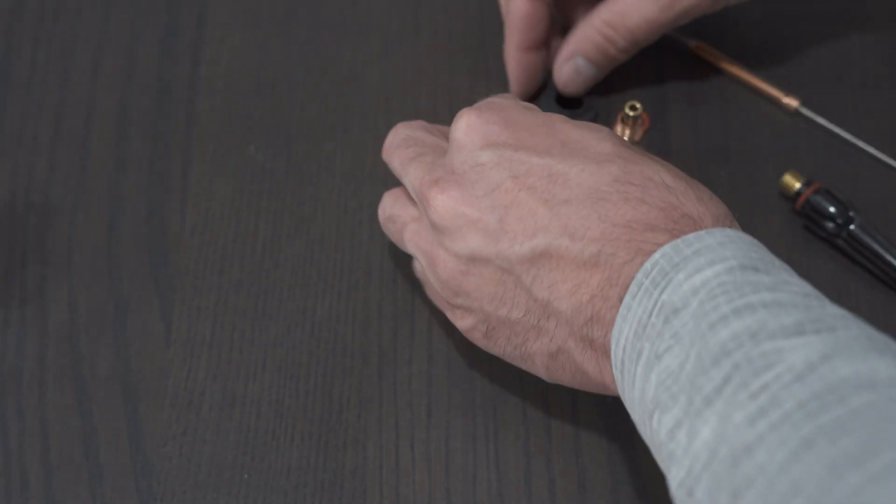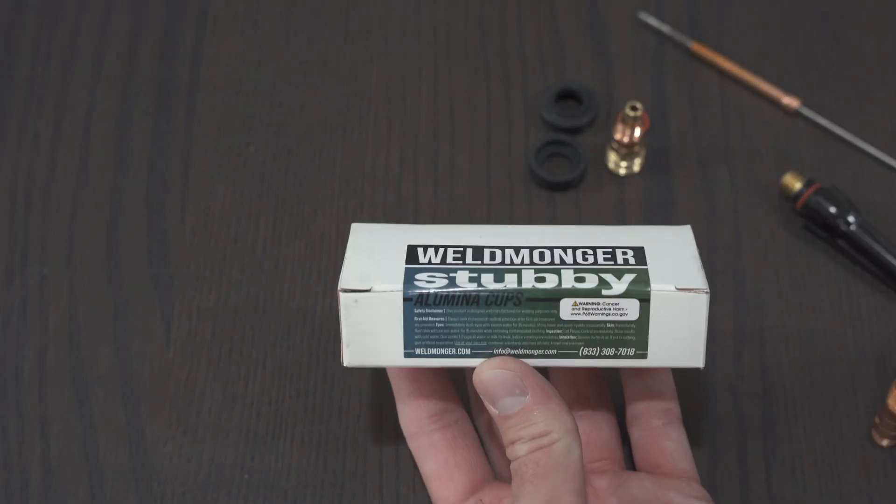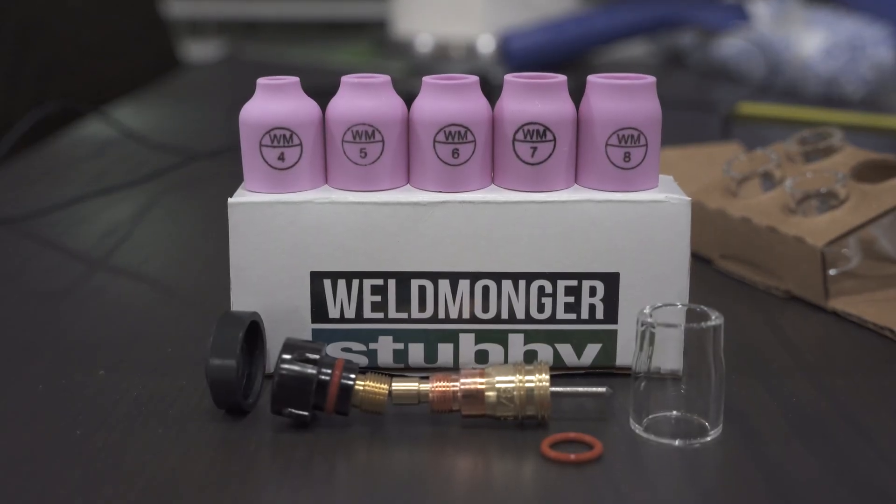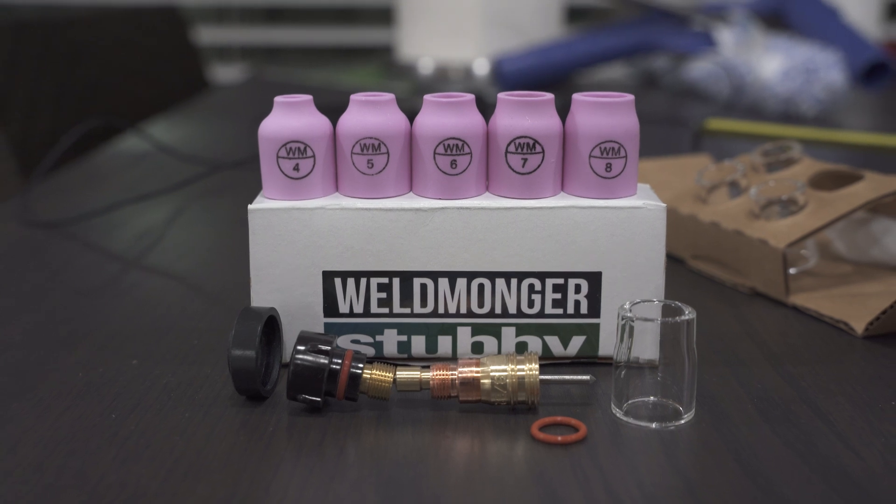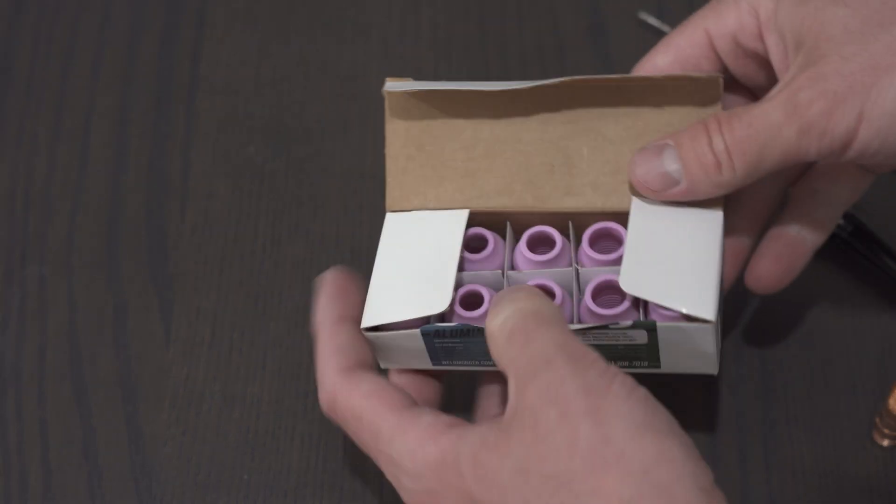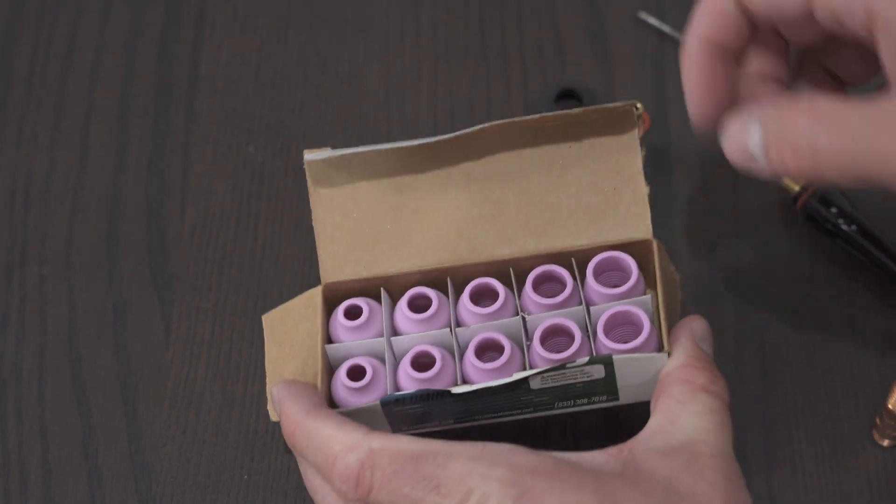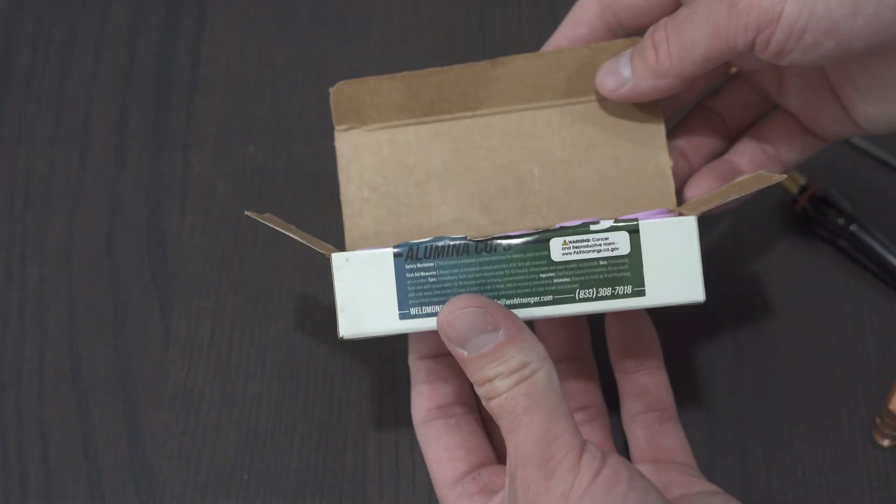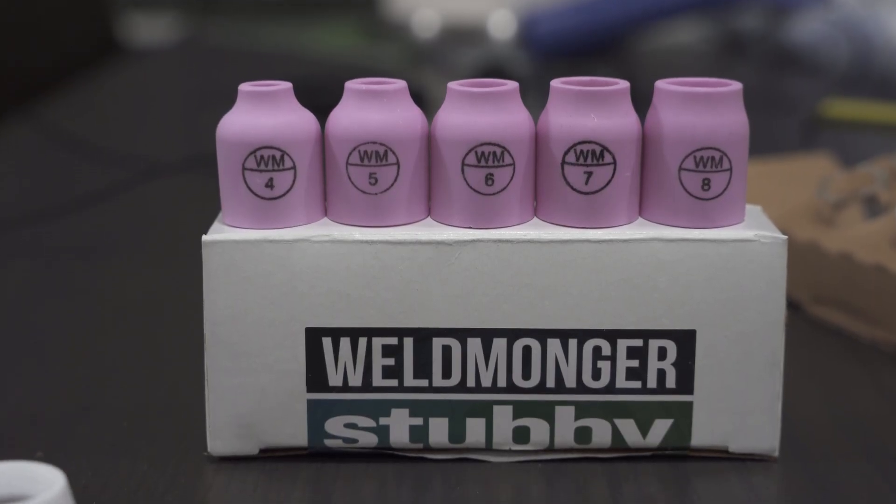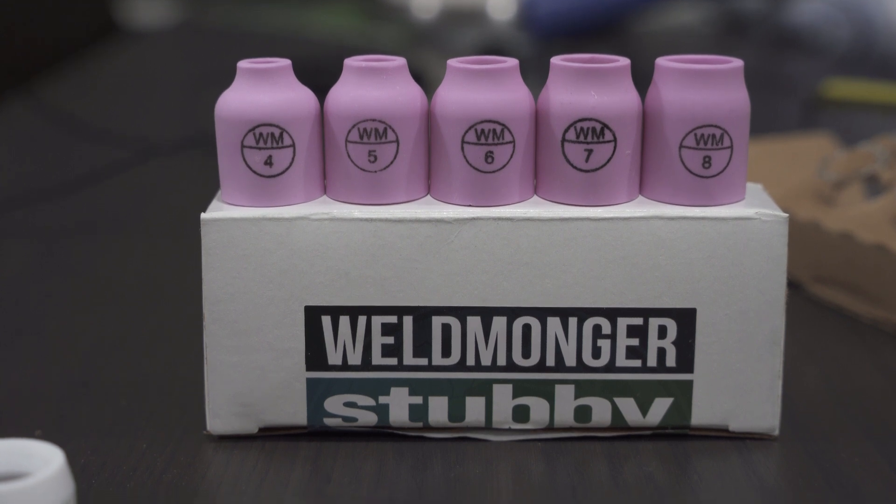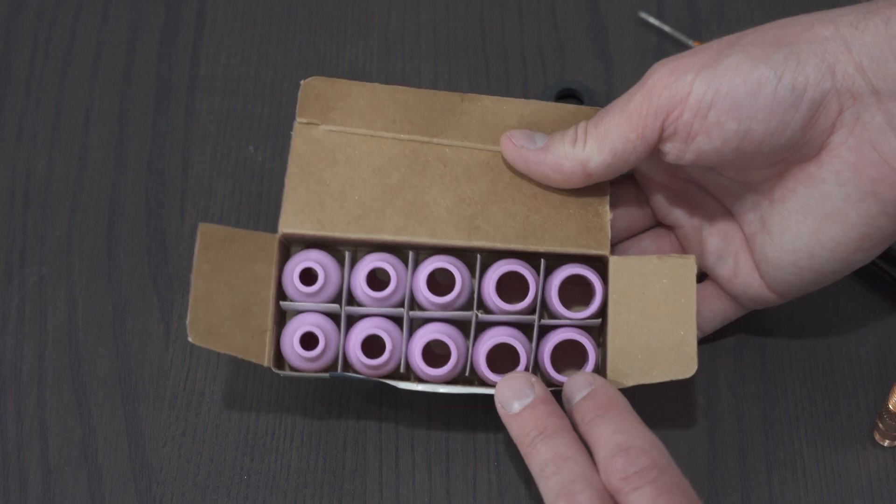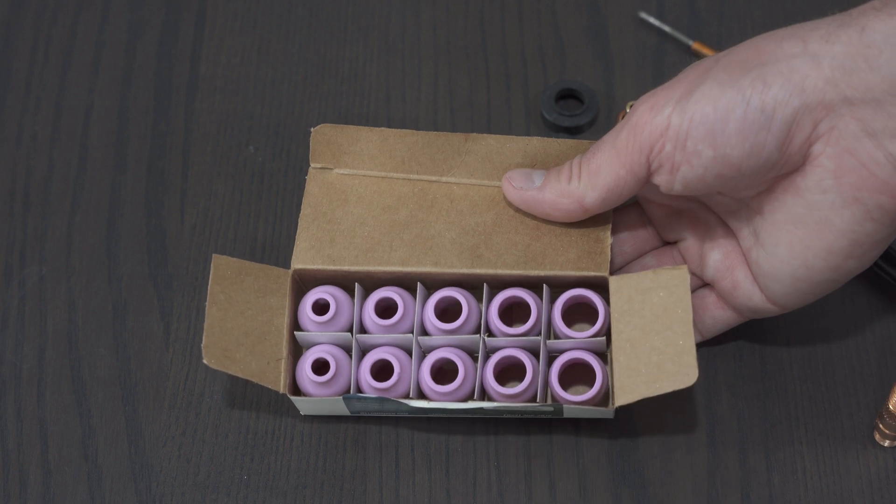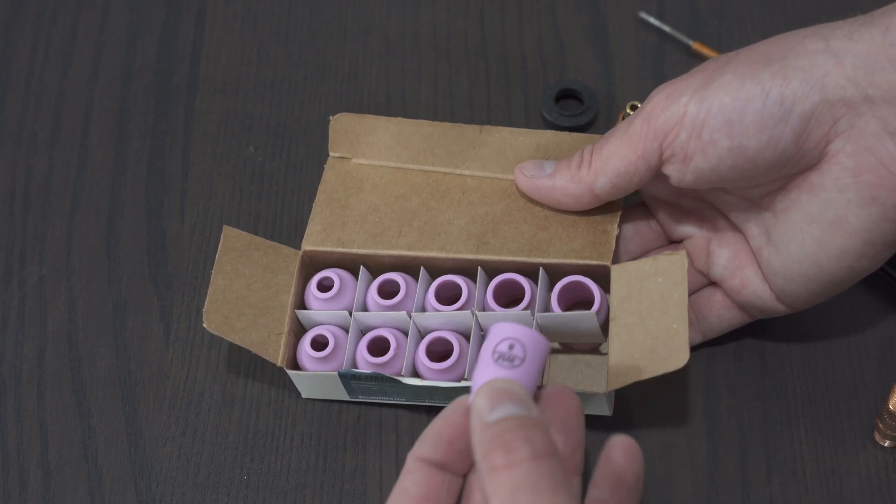Now that we have the parts that we need, we're going to go look at this Weldmonger stubby gas lens. These are the alumina cups, the typical pink style cups that you'll see. I'll open these guys up. I think they range from 8, 7, 6, 5, 4. So you get two of each. This is about $18, really a good deal if you get plenty of them to break them. But the ones that I'm really interested in are the 7 and 8. You can essentially weld pretty much anything that you need to with a TIG torch with a 7 or 8 gas lens.